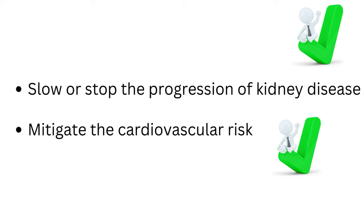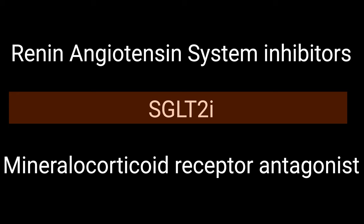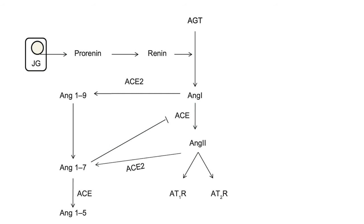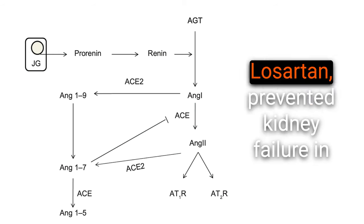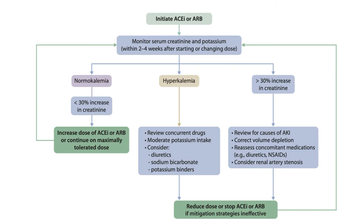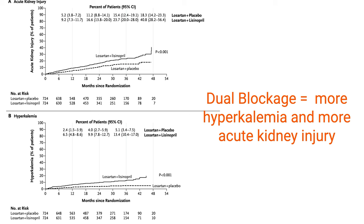Which drugs would both lower cardiovascular risk and slow the decline in kidney function? Three classes can do that: renin-angiotensin system inhibitors, SGLT2 inhibitors, and mineralocorticoid receptor antagonists. Regarding renin-angiotensin blockers: blocking the renin-angiotensin system with ACE inhibitors or angiotensin receptor blockers — irbesartan and losartan — prevented kidney failure in patients with diabetes and overt nephropathy. Despite concerns of hyperkalemia and initial worsening of serum creatinine, we need to use these agents in patients with CKD. However, there's no point in combining an angiotensin receptor blocker with an ACE inhibitor, as large trials identified an increased risk of hyperkalemia and acute kidney injury without demonstrable benefit from dual RAS blockade.